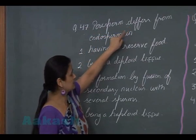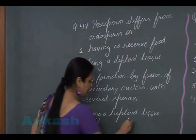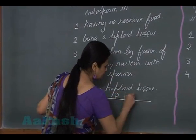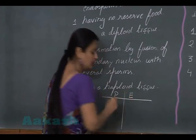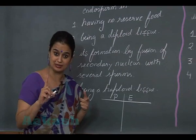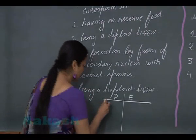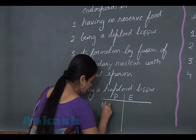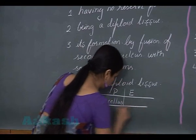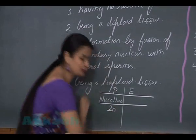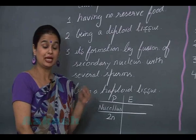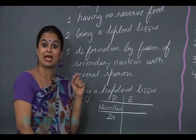Now let's discuss question number 47: how does perisperm differ from endosperm? Perisperm represents the remains of the nucellus. Since nucellus is diploid in nature, perisperm is also diploid, i.e., 2N.